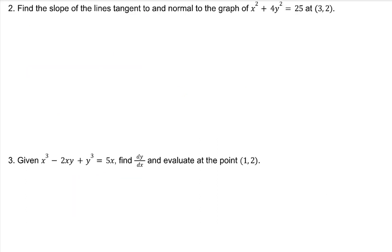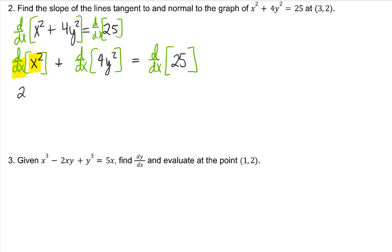Find the slope of the lines tangent to and normal to the graph of x squared plus 4y squared equals 25 at the point 3, 2. Let's derive both sides with respect to x. The derivative with respect to x of x squared, our variables agree, so it's just 2x. The derivative of 4y squared with respect to x, our variables do not agree, so we need to include chain rule, pop down, power down, multiply by the derivative of the inside, which is the derivative of y, with respect to what variable? x.